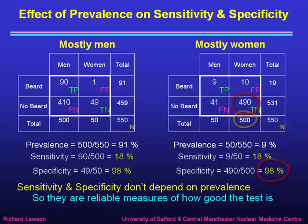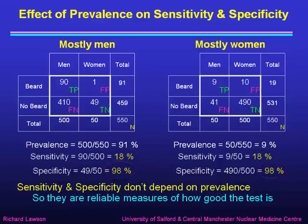So we see that sensitivity and specificity don't depend on the prevalence. It's 18% sensitivity for the mostly-men group and for the mostly-women group, and 98% specificity for both groups as well. So sensitivity and specificity are reliable measures of how good the test is — they don't depend on the prevalence, unlike accuracy, which as we saw in the previous part of this lecture does depend on prevalence.